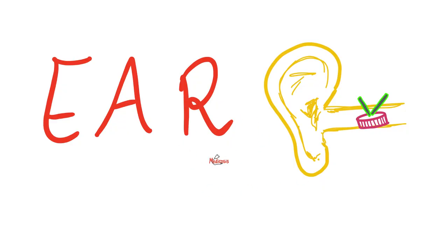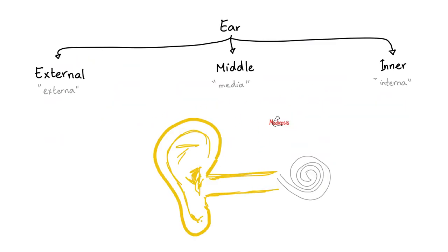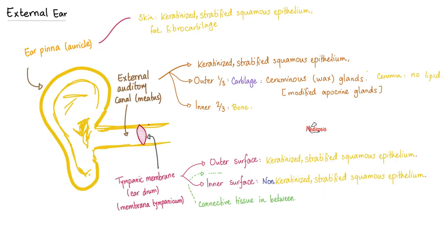Quick review of the anatomy of the ear: your ear has three parts — external ear, middle ear, and inner ear. The external ear is made of the auricle, or the ear pinna, then the external auditory canal, and the tympanic membrane, or the eardrum. Some hypotheses suggest that cholesteatoma develops in the middle ear due to a perforation in the tympanic membrane and spread of material from the external ear into the middle ear.